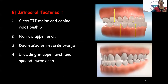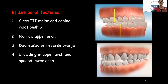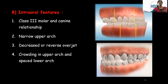The intra-oral features include a Class 3 molar relation with the canine also in a Class 3 relationship. The maxillary arch will be narrow, with a decreased overjet, edge-to-edge bite, or a reverse overjet. There will be crowding in the upper arch and spacing in the lower anterior teeth.